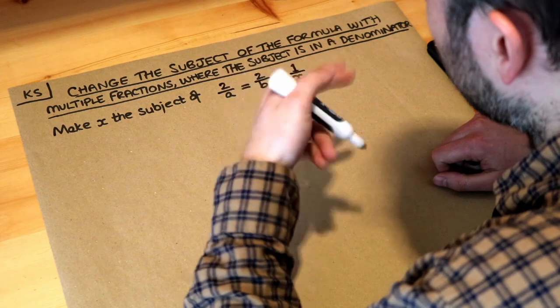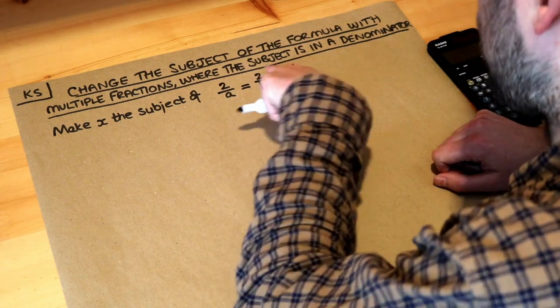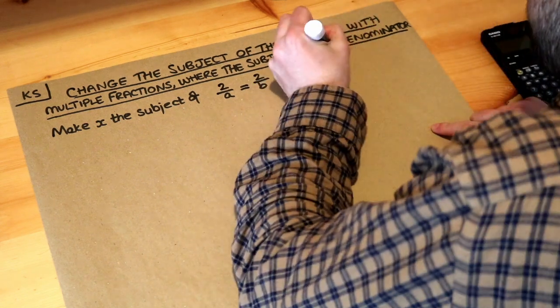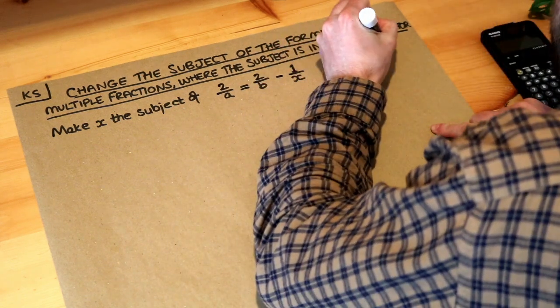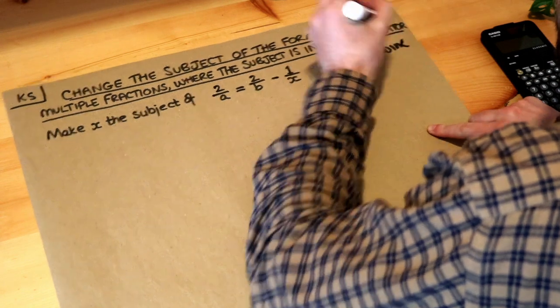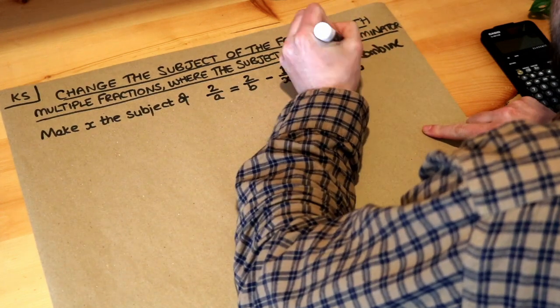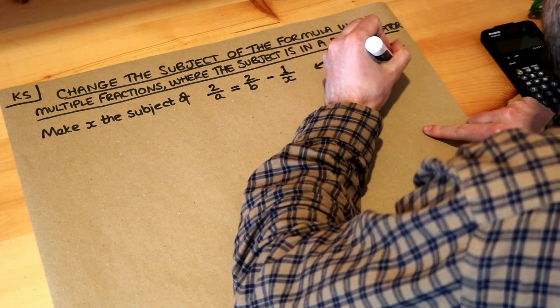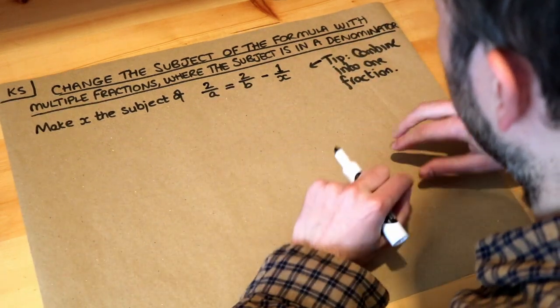Now whenever you're trying to either solve the equation or change the subject, we've got two fractions that are either added or subtracted. I would combine them into one fraction. So tip: combine into one fraction. And we do that if you've got a subtraction or an addition of two fractions here, and that will allow us to simplify more.